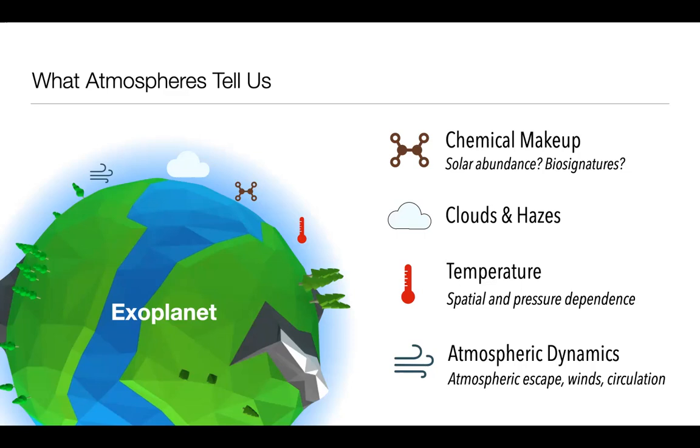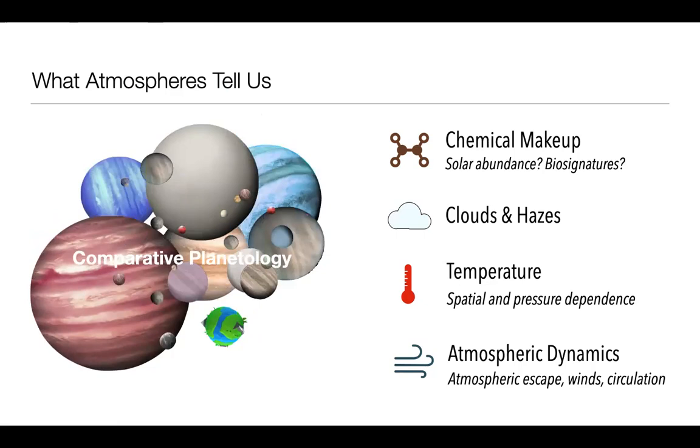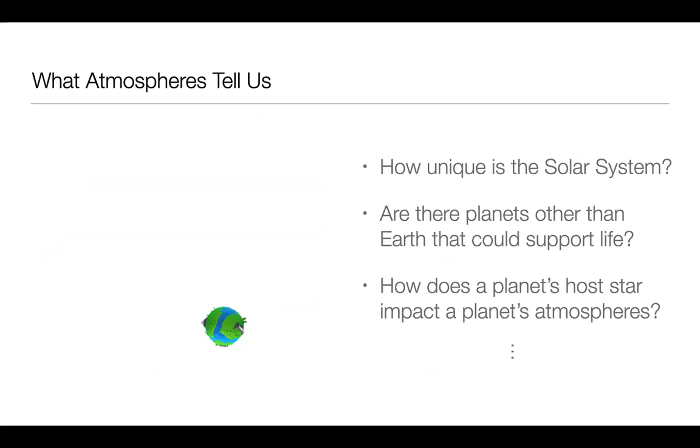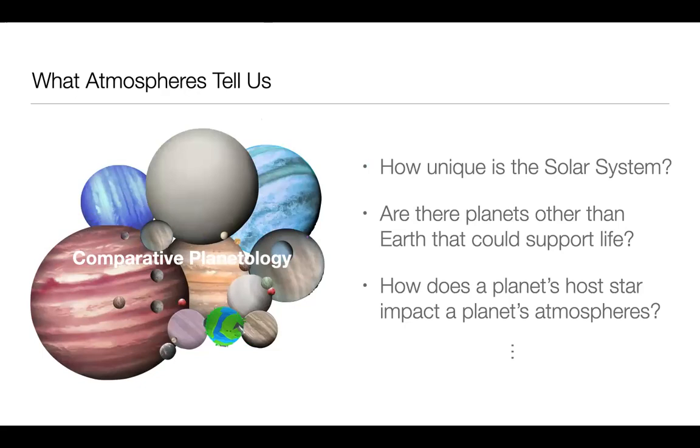These are all really interesting properties that we can currently probe today with today's instruments. Where it gets really interesting, though, I think, is when we can detect this for many, many planets and start comparing planets to one another and also placing the solar system in context. So when we do these measurements for lots of planets, we can start to answer questions like the ones that I've listed here, such as how unique is the solar system? Are there planets other than Earth that could support life? That one's really interesting. And also lots of other things like, we can start looking at the planet's host star and try to learn about how that might relate to what we're seeing in the planet's atmosphere.